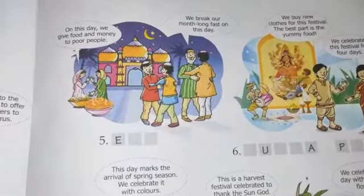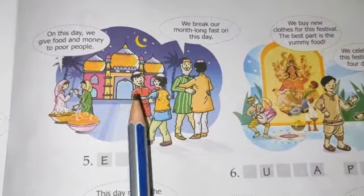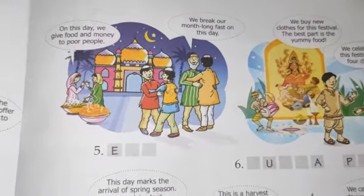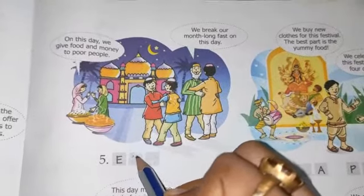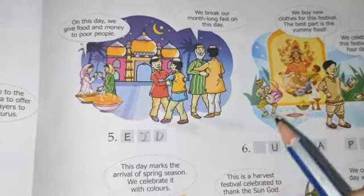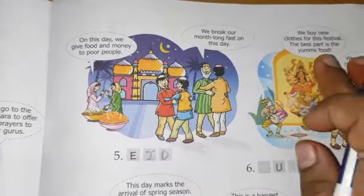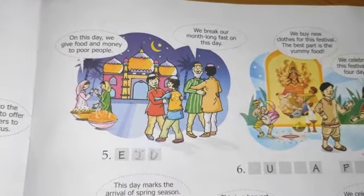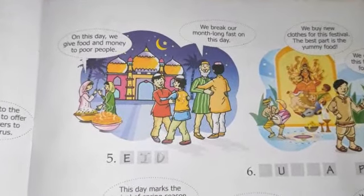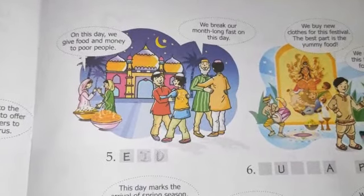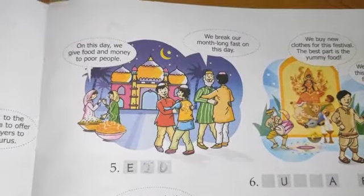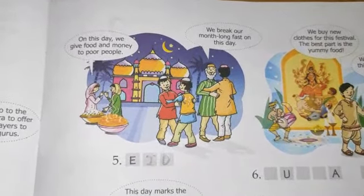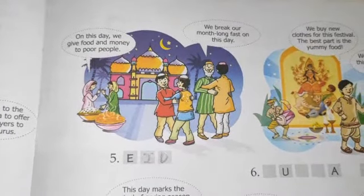On this day, we give food and money to poor people and break our month-long fast. The festival is Eid — E-I-D — Eid ul-Fitr. This festival is celebrated after keeping the fast of a month, followed by Eid ul-Fitr.